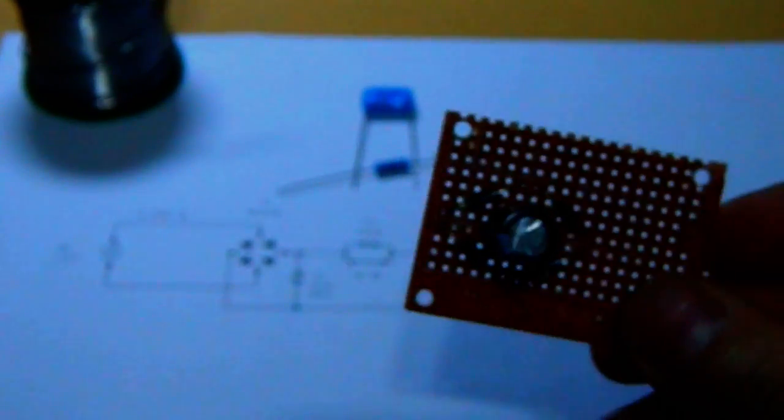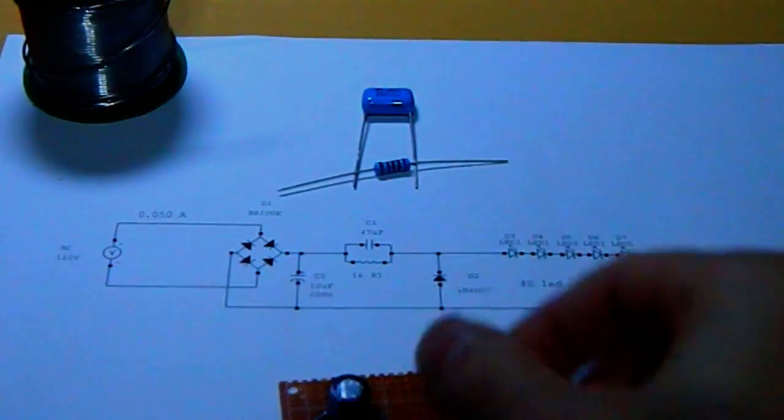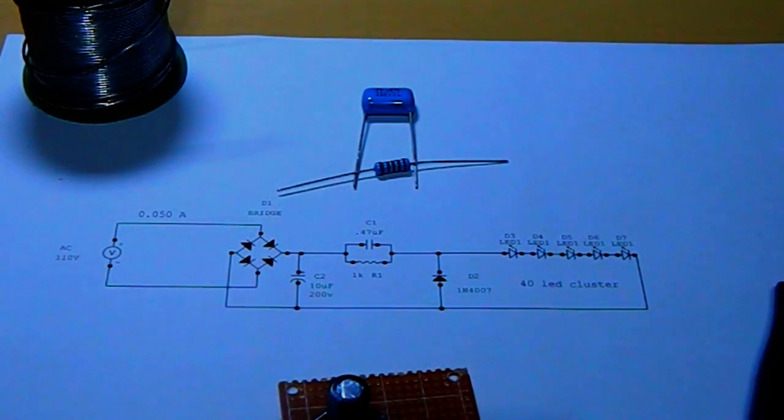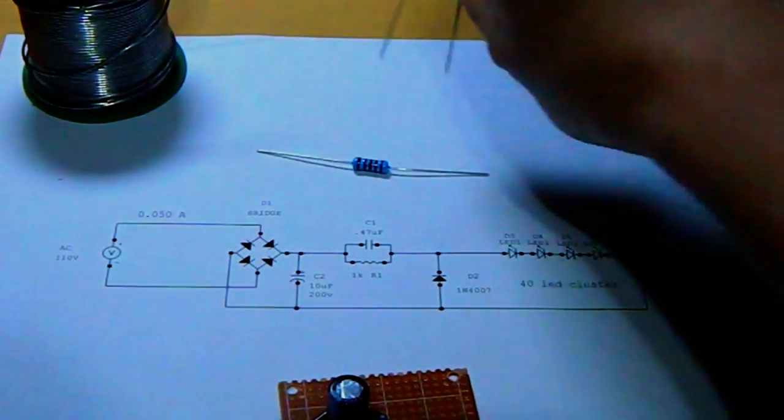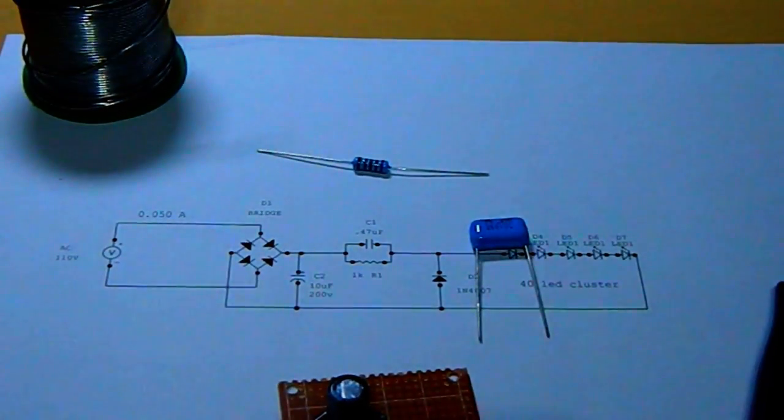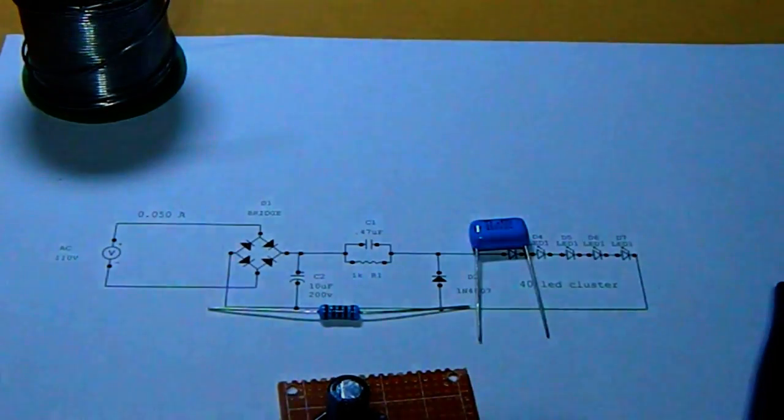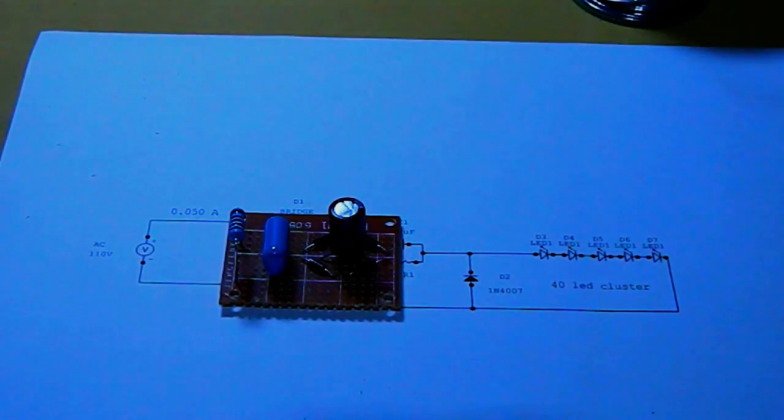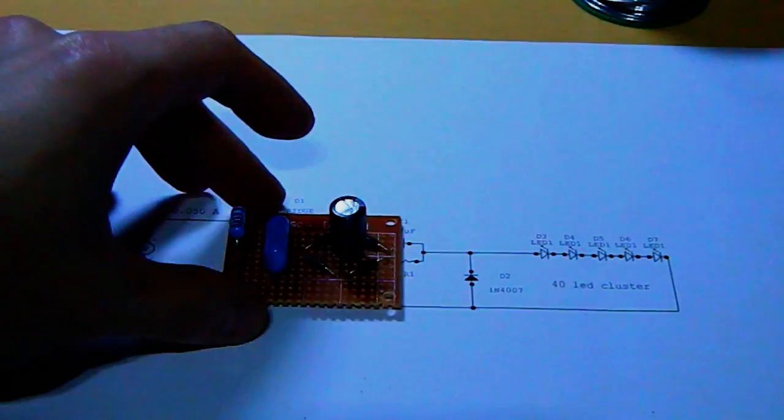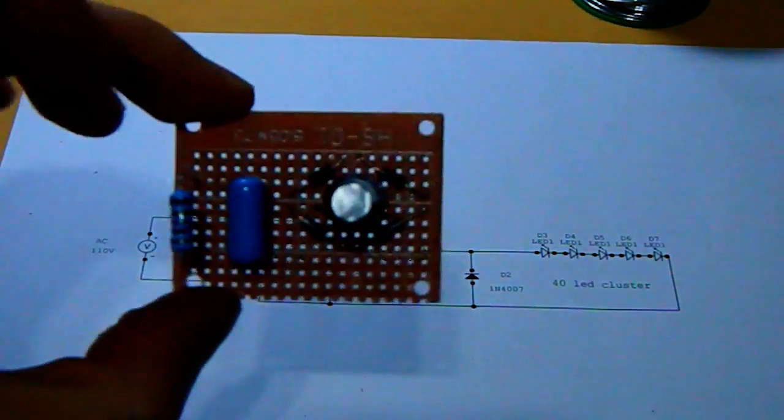And the next step is to install the tank circuit. That is the capacitor and the resistor. After the tank circuit installed, it is ready.